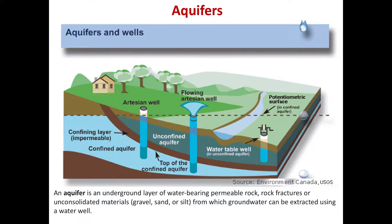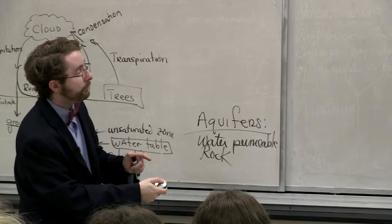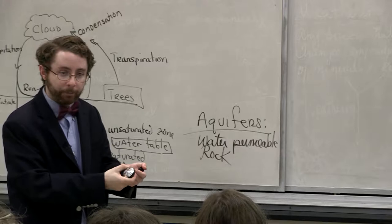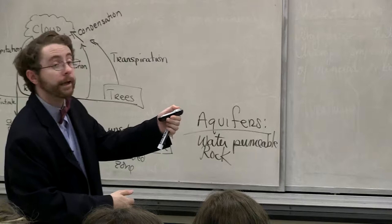However, some groundwater can get beneath an impermeable layer — if it seeped in somewhere and then made its way down. You have this confining layer of impermeable rock with groundwater trapped there — that's referred to as the confined aquifer. Using special types of wells, you can actually drill down past the confining layer and get to water that way.